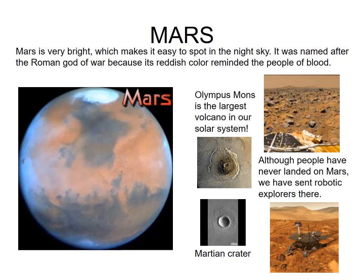Olympus Mons is the largest volcano in our solar system, located on Mars. People have never landed on Mars, but NASA has occasionally sent robotic explorers there. Scientists send these robotic missions to understand whether there is any living entity and whether the planet can be transformed into a place for living. You can also see craters called Martian craters on Mars, and mission pictures from robotic landers.